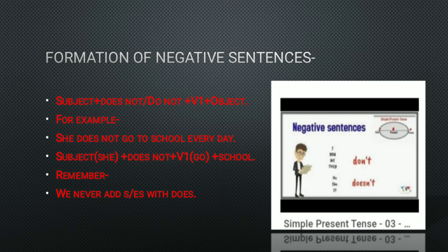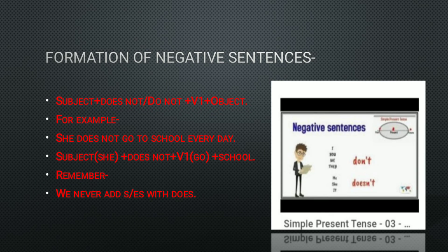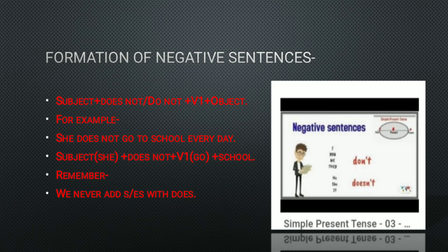Now, how do we construct a negative sentence in simple present tense? The formation is: Subject + does not / do not + V1 + Object. We use 'does not' with singular subjects and 'do not' with plural subjects. For example, 'She does not go to school every day' — this is a singular subject. Remember, we never add 's' or 'es' with 'does.' Wherever we use 'does,' we will not add 's' or 'es' with the verb.